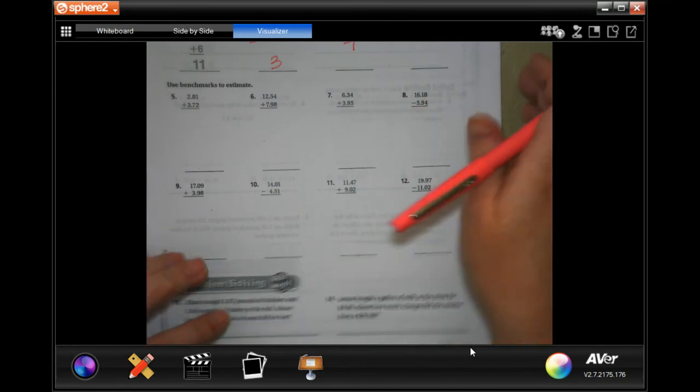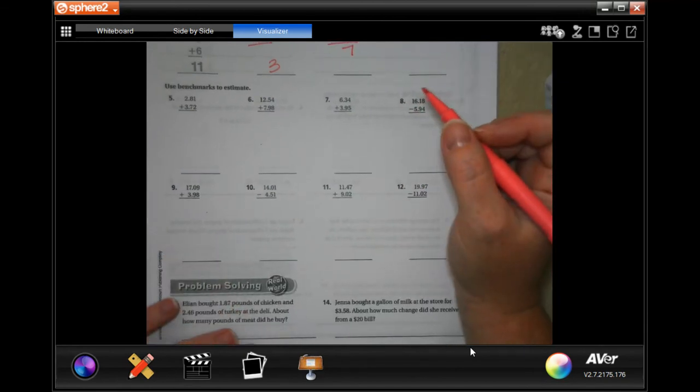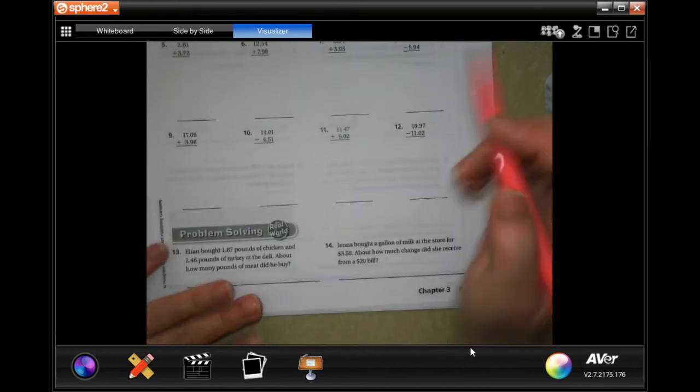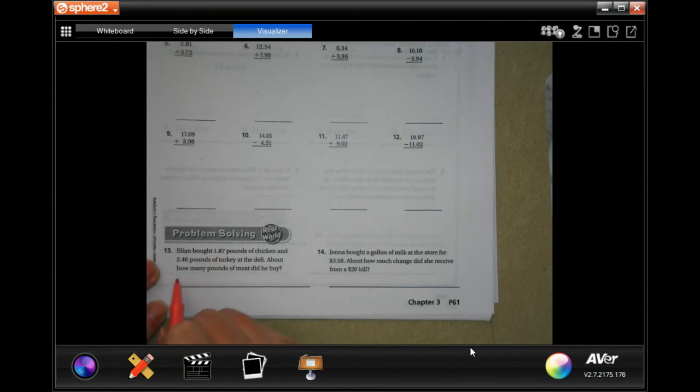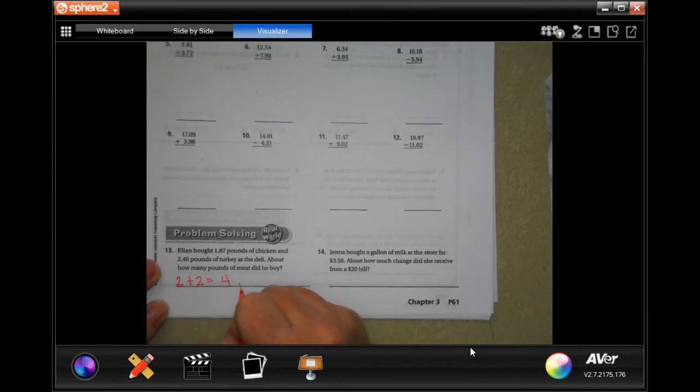All right. So we are going to go down to number 13 down here. It says, Ellian bought 1.87 pounds of chicken and 2.46 pounds of turkey at the deli. About how many pounds of meat did you buy? Well, 1.87 is going to round to 2 and 2.46 is going to round to 2.